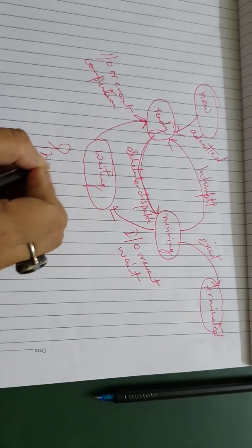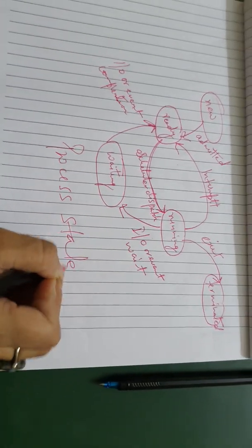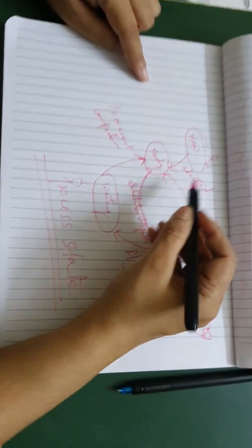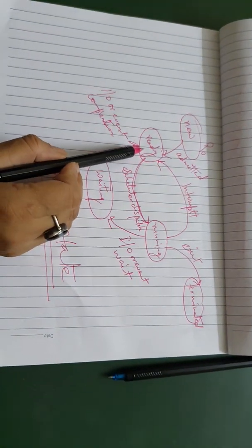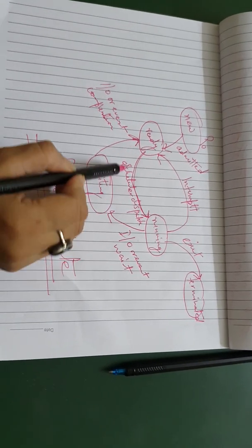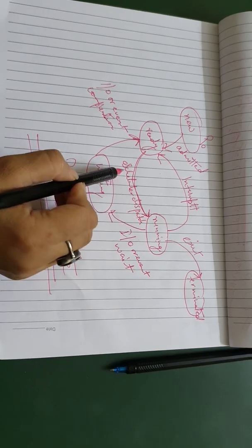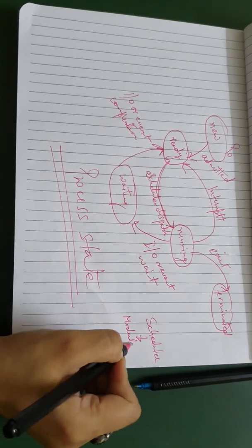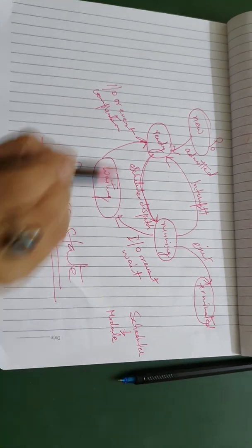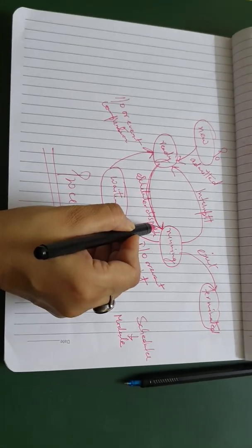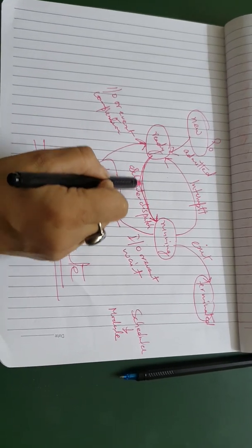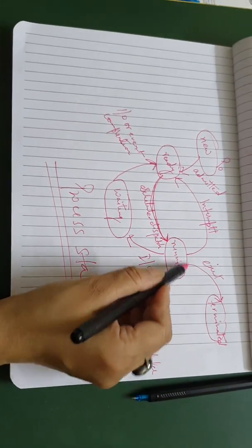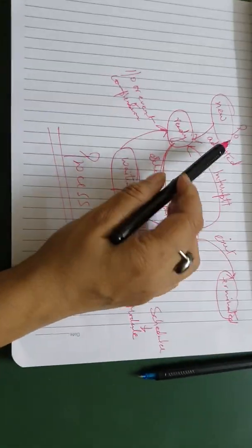These are the process state conditions. Now, any new process — say p0 — is admitted and goes into the ready queue. Through the scheduler dispatcher, which is a module responsible for dispatching a process to the CPU, the process is taken from the ready queue and dispatched to the CPU, entering the running state.